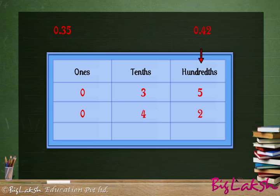So we will add 5 and 2 first, and then 3 and 4. On adding 5 and 2 we have 7, and 3 and 4 we have 7. At the ones place there is no numeral, so it will be considered as 0, and 0 plus 0 is 0.